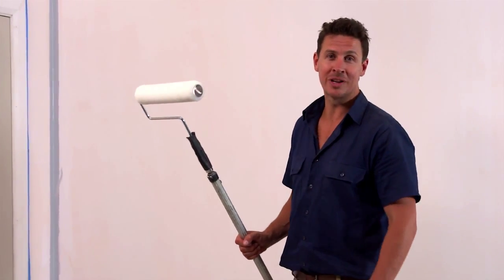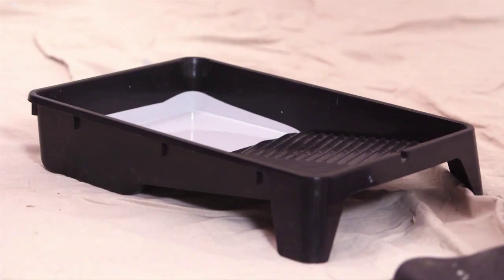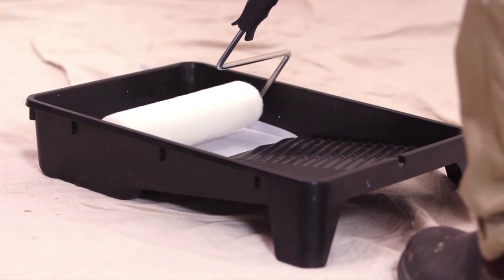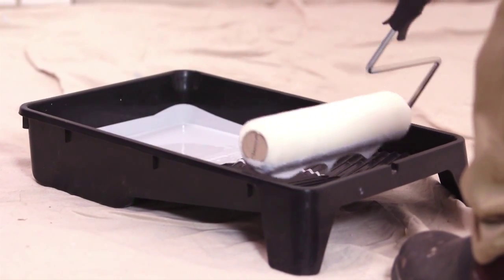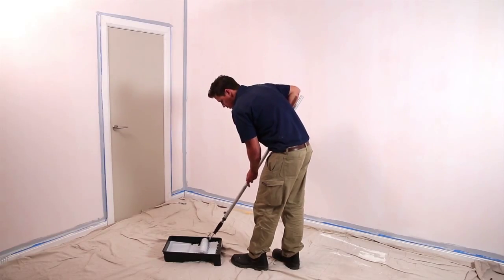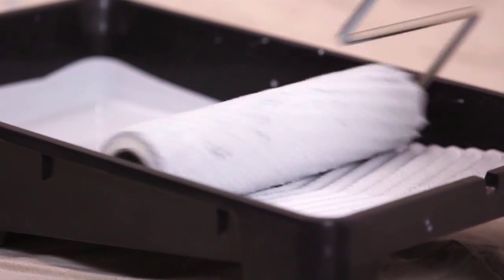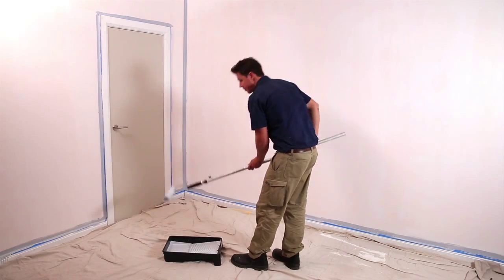Okay, now it's time for rolling. Take your roller and dip it into the paint just about a quarter. Bring it back. My roller looks full of paint now. It's time to get it on the wall.